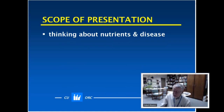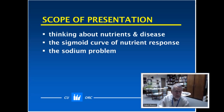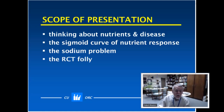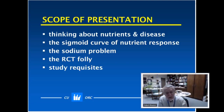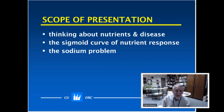In my presentation, I'm going to spend a few moments thinking about how we need to think about nutrients and disease. I'm going to talk about the way responses occur when you change nutritional intake, called a sigmoid curve because the response curve looks like an S. I'm going to talk about problems with our troubled relationship using the sodium problem as an example. I'm also going to talk about the foolishness of requiring randomized controlled trials for nutrient intake recommendations, and suggest guidelines or prerequisites necessary for a study of nutrients.